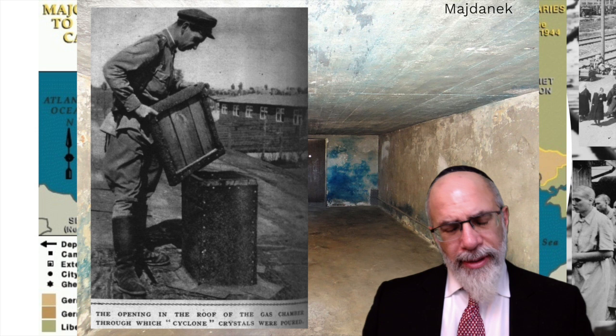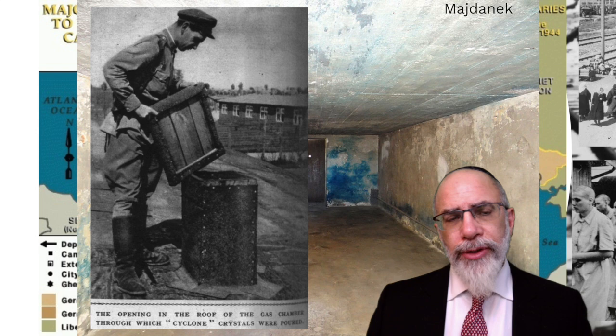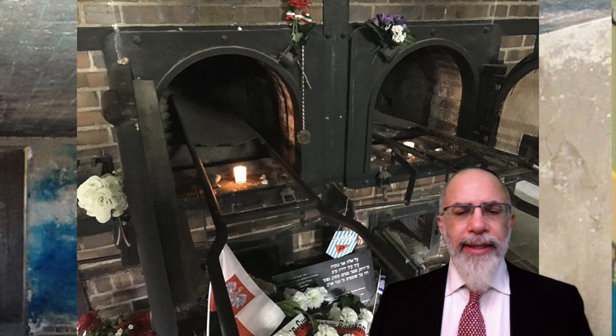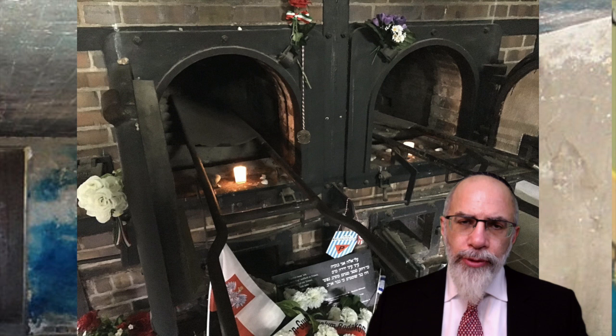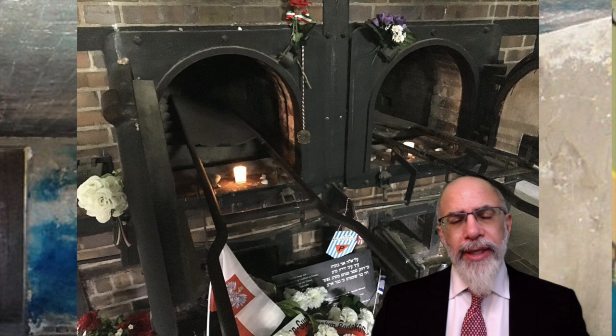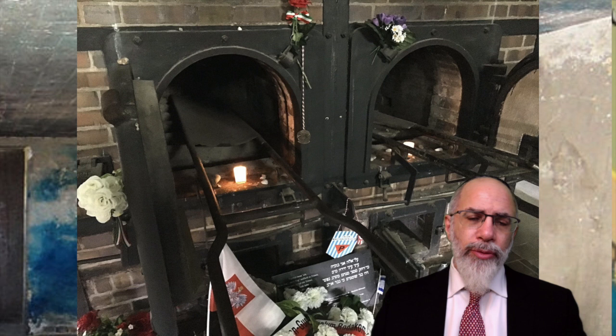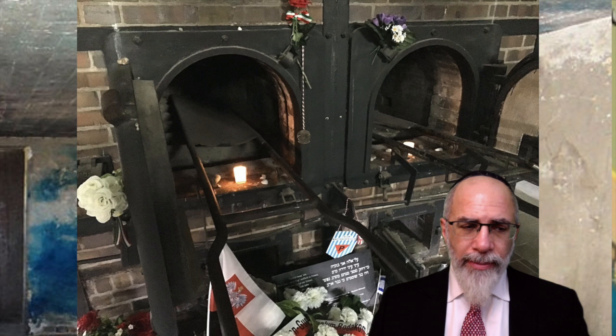Here is a photograph from Majdanek showing the vent on the roof where the Zyklon B capsules would be dropped. In some cases the gas chambers had to be heated so that the pellets would transform into gas in the warmer atmosphere. The final destination would be the ovens. Bodies were removed by prisoners called Sonderkommando, or special commando squads, and brought to crematoria which operated day and night to rid the camp of the remains of victims.